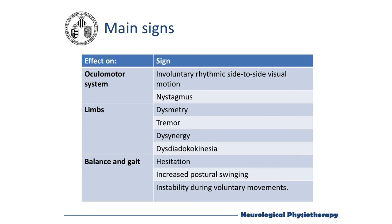On balance and gait, there is hesitation — that is, lack of determination, firmness and security — and the head and hips move uncoordinated, moving alternately rather than simultaneously. There is also increased postural swaying, both when sitting and standing. Finally, there is instability during voluntary movements: poor coordination between a voluntary movement and the postural adjustments required for it.